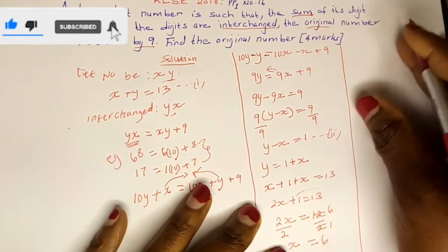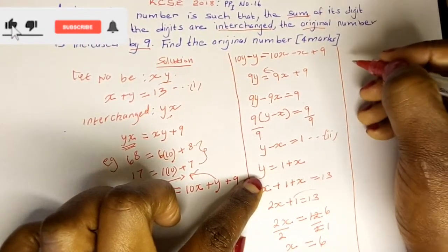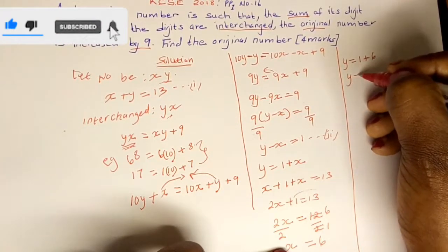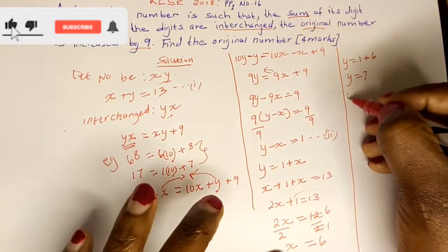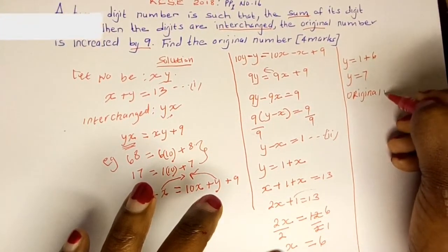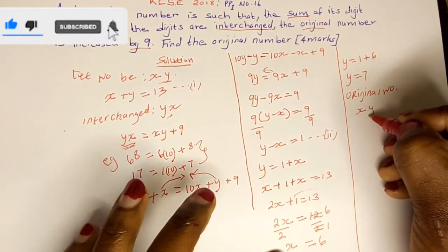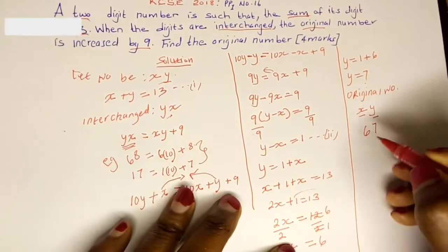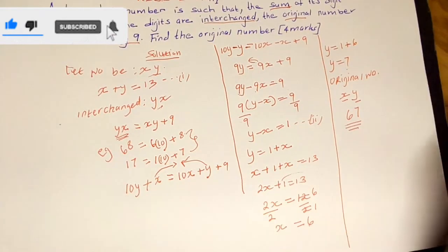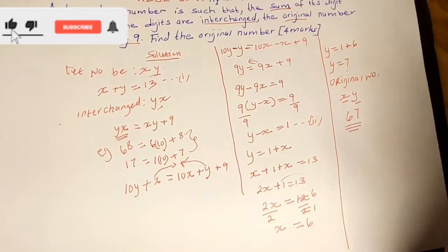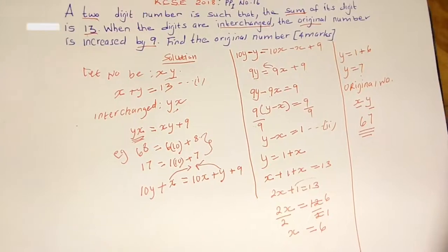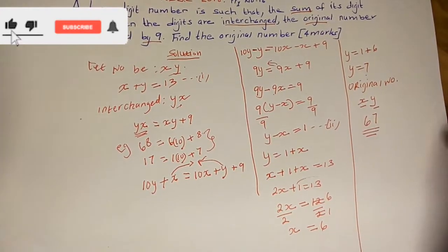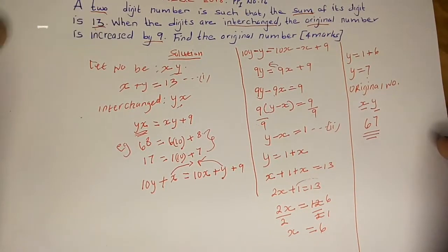The value of X is 6. Now substituting back, Y equals 1 plus X, so Y equals 1 plus 6, which gives Y equals 7. Remember our original number was XY, so the value of X is 6 and the value of Y is 7. Therefore the original number is 67. It's very easy to score your marks if you have the knowledge of natural numbers, especially the place value — you have to break it down into ones and tens to solve such problems.